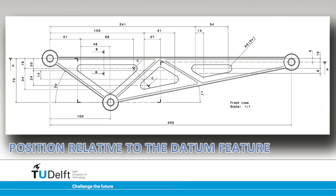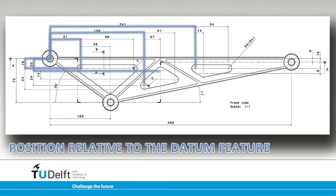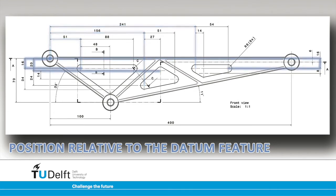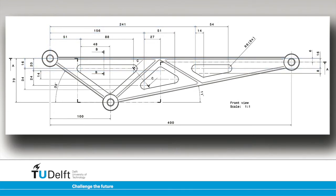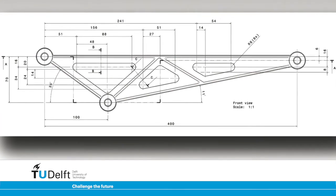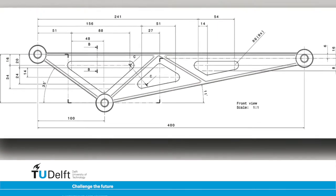The position of each lightening hole is given by a dimension starting at the datum feature — the left hole — ending at one of the arc centres. Each sub-item, in this case a lightening hole, is dimensioned relative to the datum feature in the horizontal and vertical direction. In this way, both the size and position of the lightening holes are unambiguously documented.